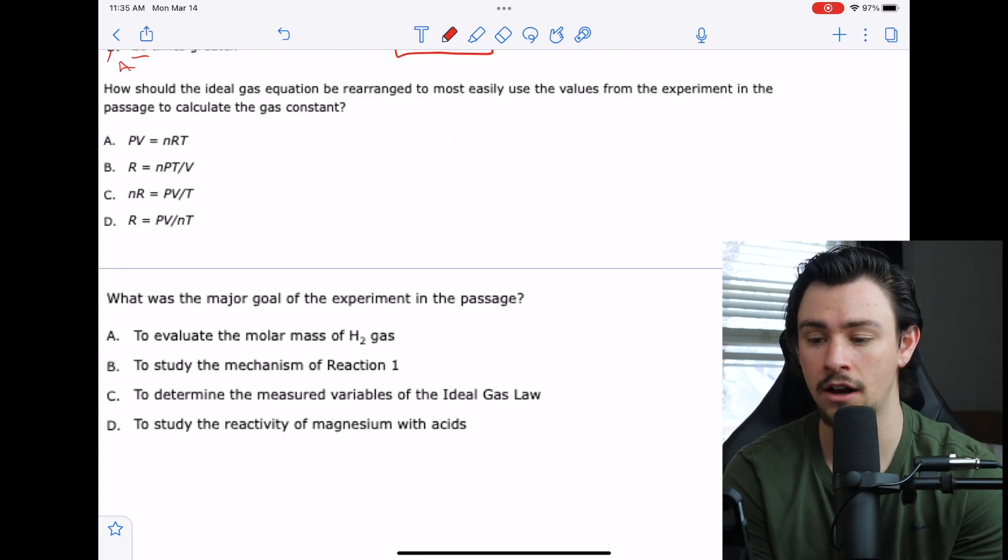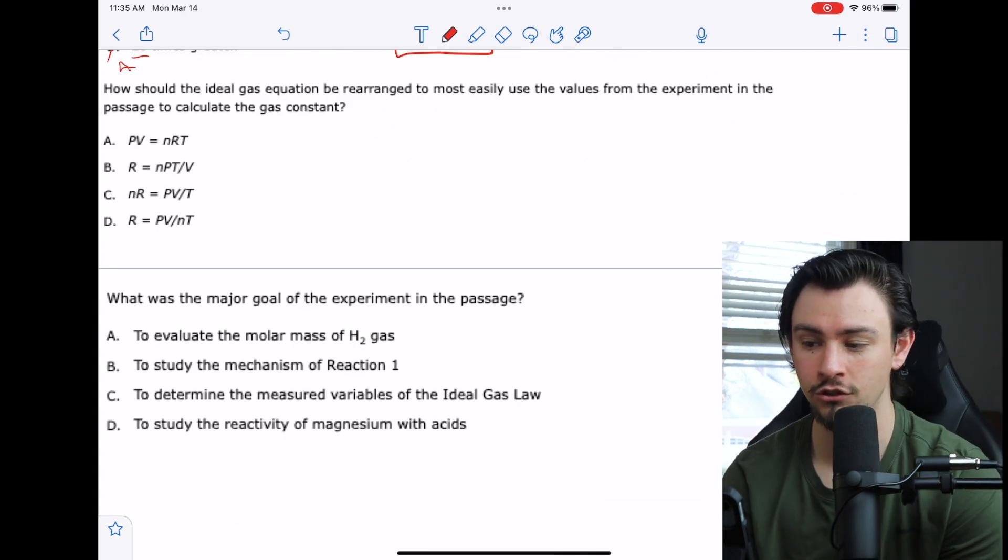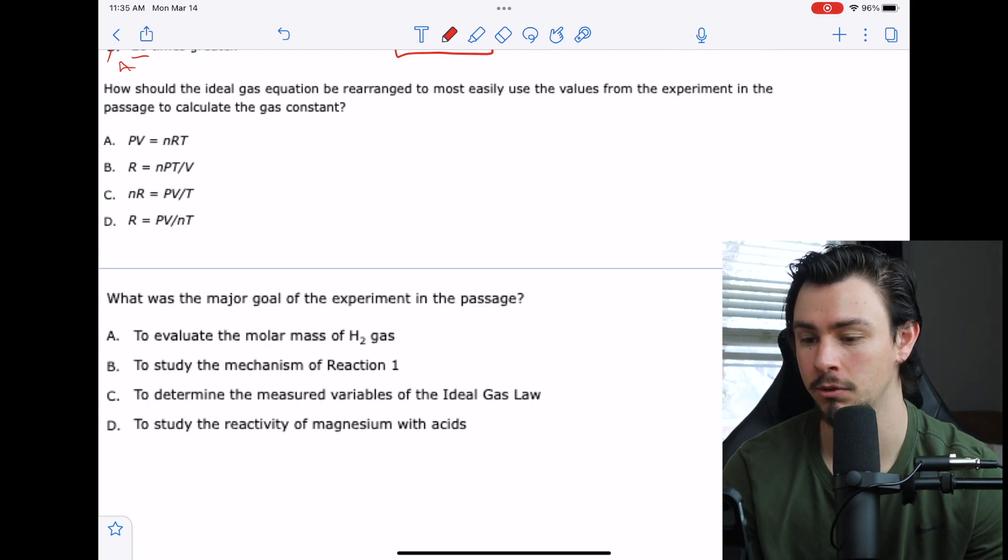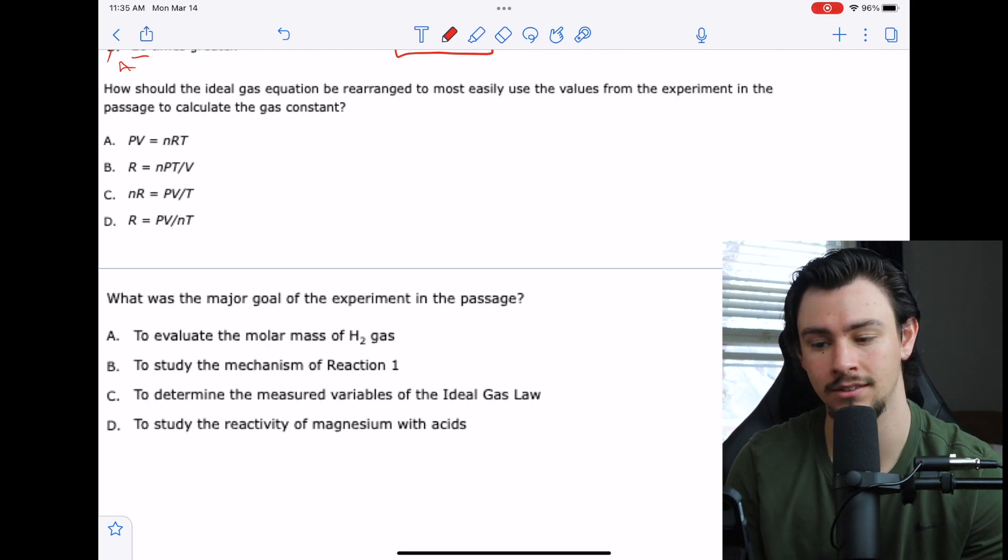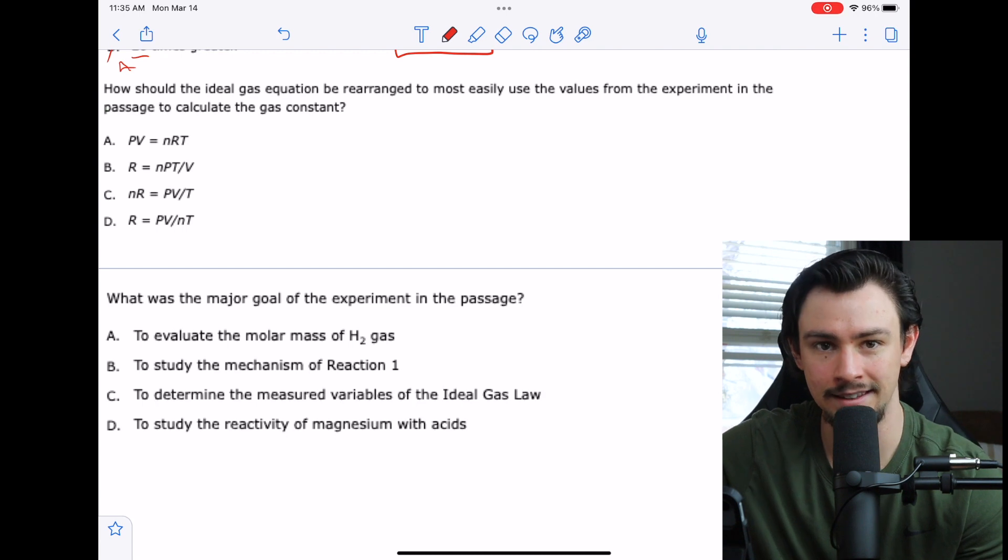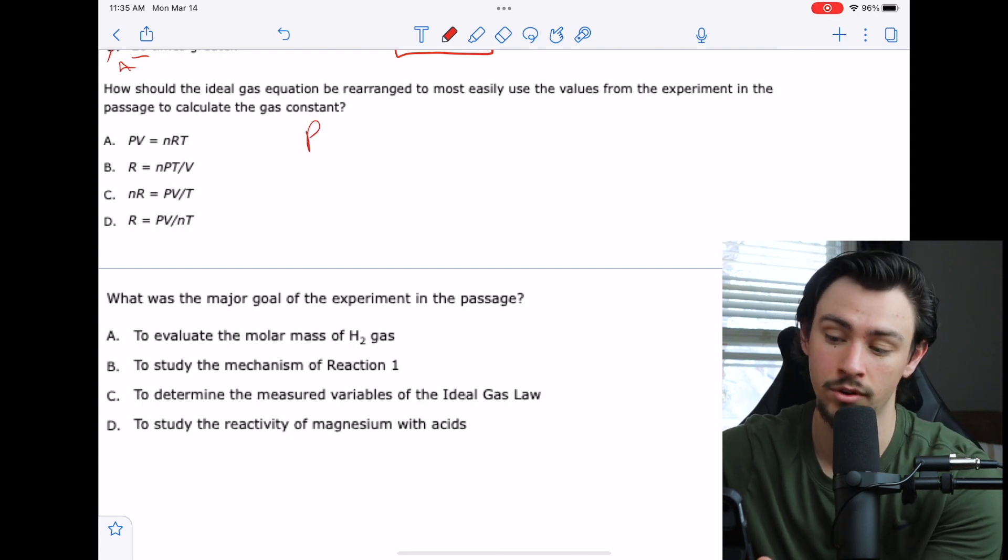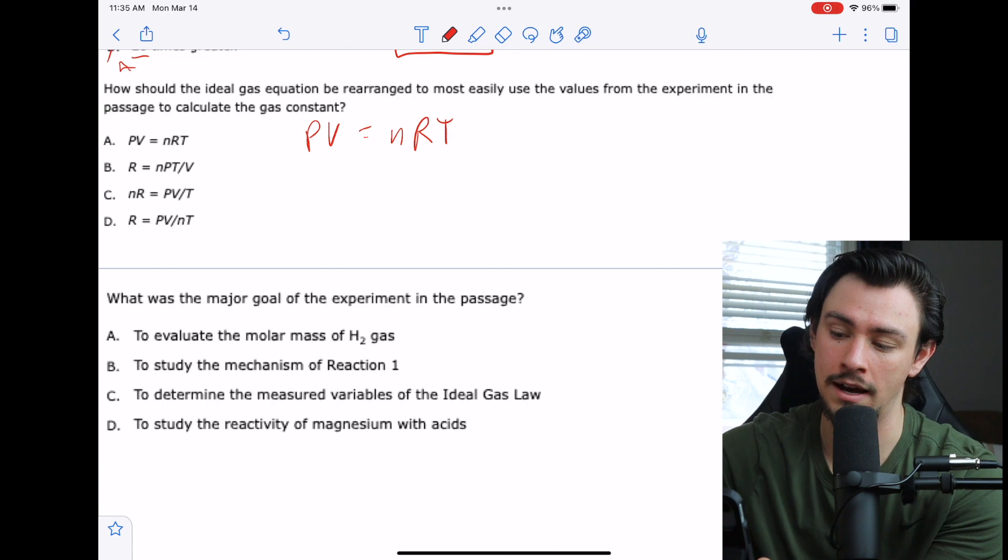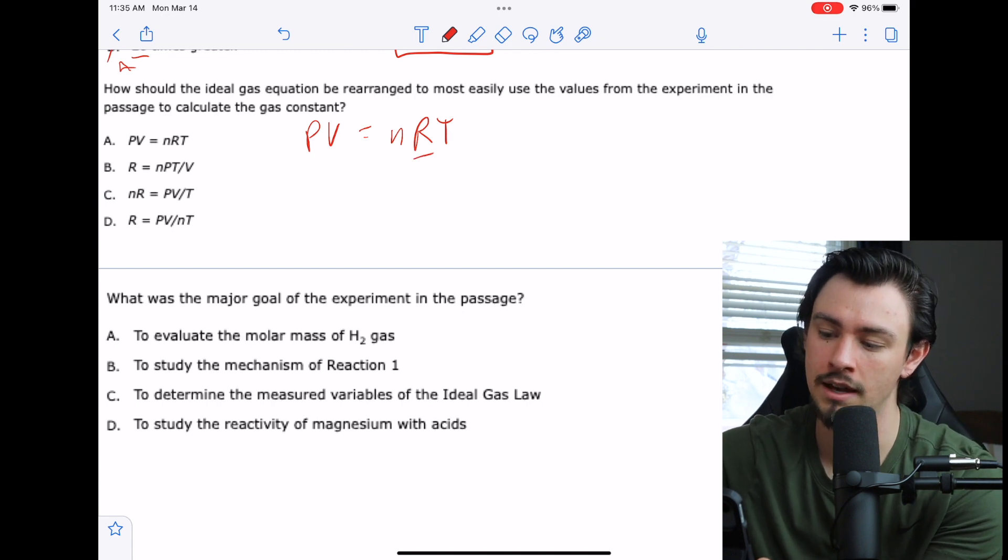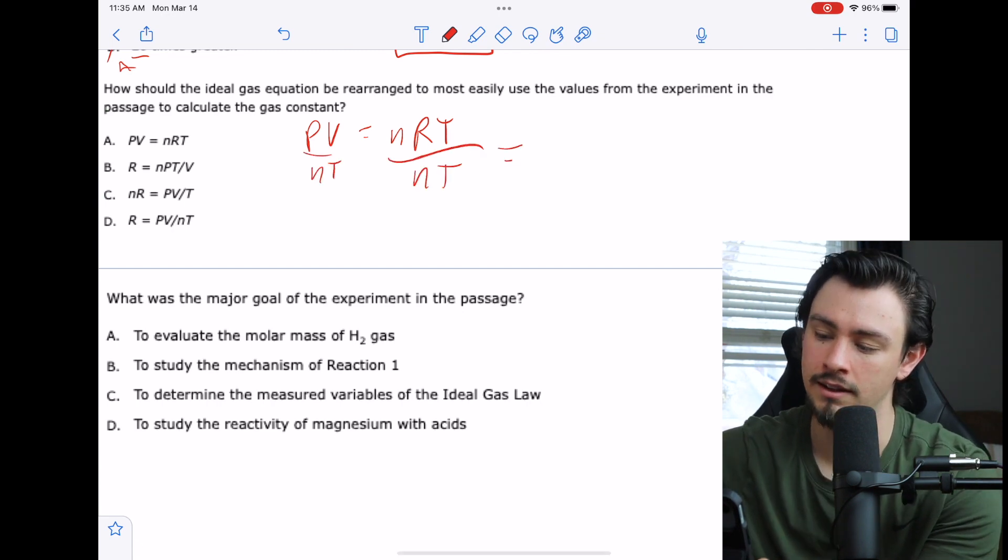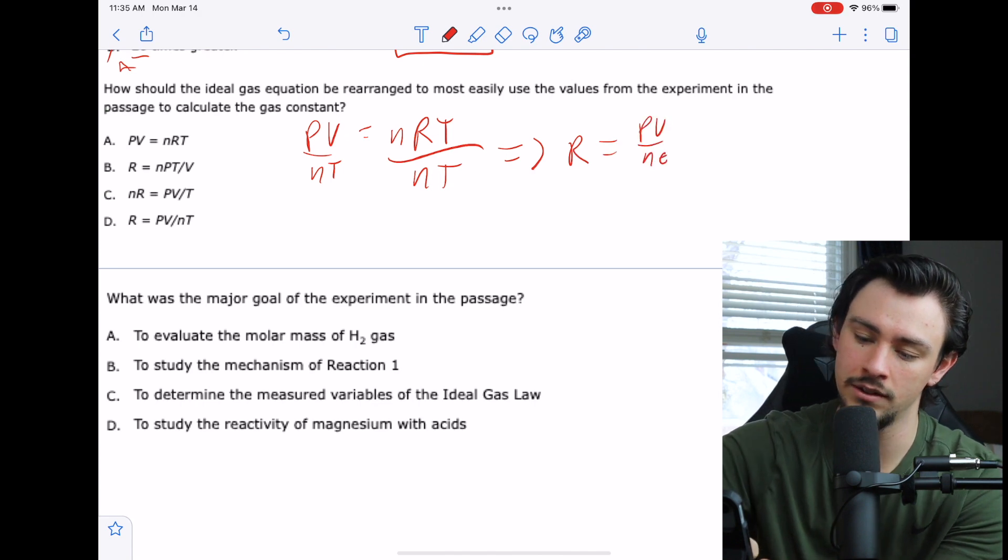Number 24 is an easy one. It says, how should the ideal gas equation be rearranged to most easily use the values from the experiment in the passage to calculate the gas constant? I.e., how do you isolate the gas constant? So if you know your equations here, which you should, then it's just simple algebra. How do I isolate R? The way that I would do that is divide both sides by NT. And then I would say R is equal to PV over NT, which is answer choice D.